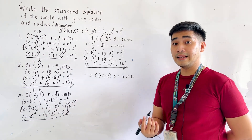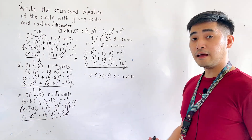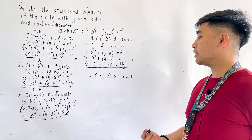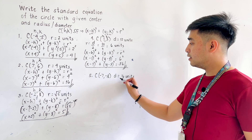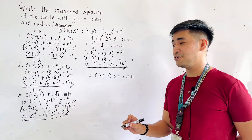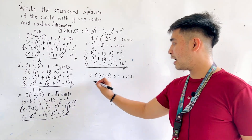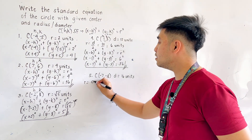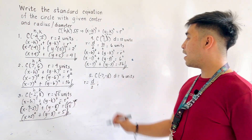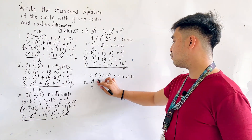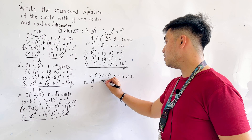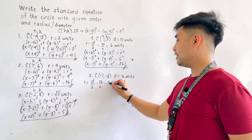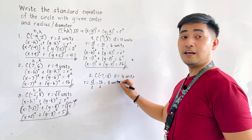For number 5, we are given center located at (negative 7, negative 8), and the diameter is 16 units. Again, since we are given the diameter, we divide it by 2 to get the radius. So radius equals 16 over 2, which equals 8 units.